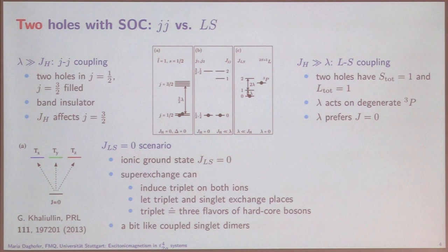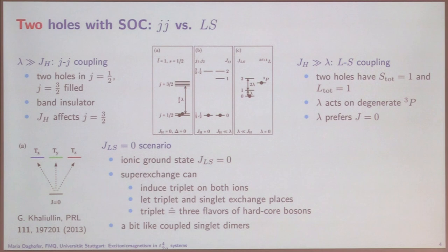The effective physics is a bit like the stories we know about singlet dimers, where two sites are very strongly coupled into a singlet, and the dimers next to each other talk a bit, making the triplet excitations on each dimer mobile and interesting. It's similar but also different, because in our case the dimer is on the same site and driven by spin-orbit coupling.